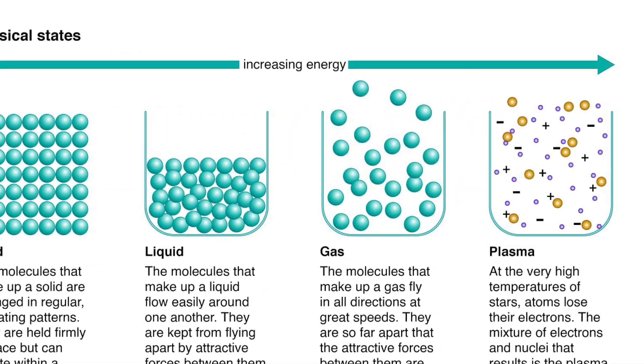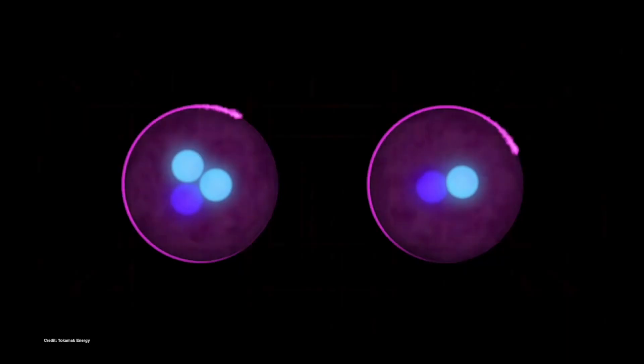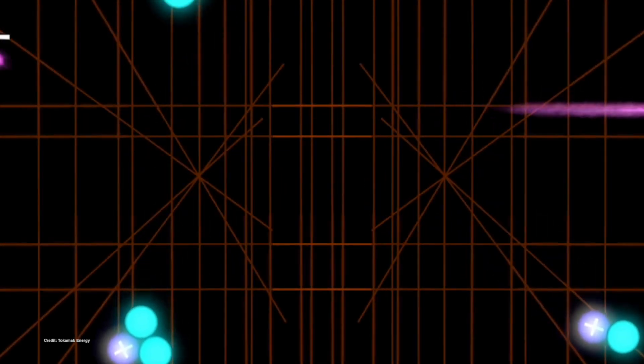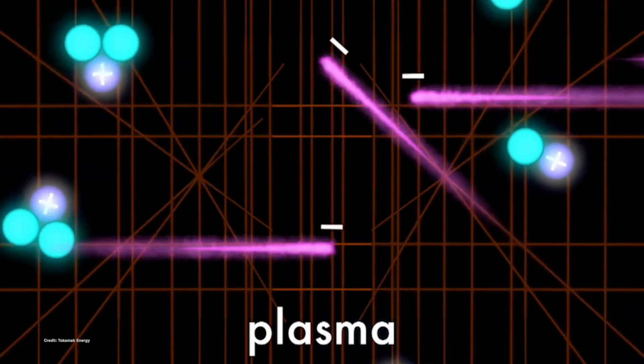So what is a plasma? Let's start from a gas, which is simpler. Imagine putting a gas inside a box, then heating it up so the particles begin to hit the walls with larger and larger energies. At some point, there is a phase transition where the atoms of the gas become ionized — an electron is stripped off from the atoms. And inside that box, you no longer have a gas. You have a plasma.